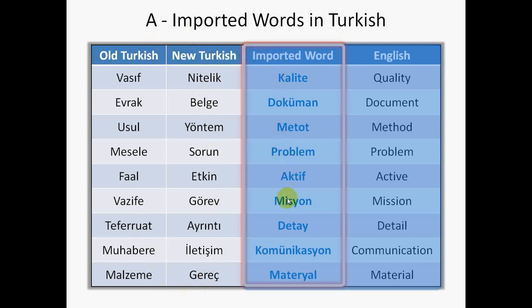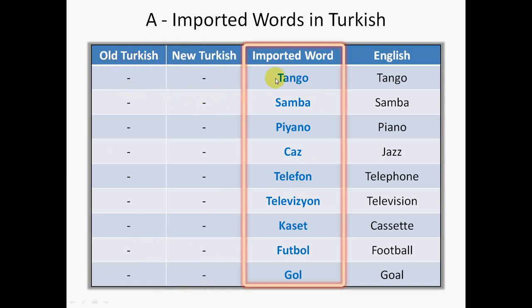Another good thing about the imported words is that there are no other alternatives for some of them. So, for example, Tango is Tango, Samba is Samba, and Piano, Jazz, Telephone, Television, Cassette, Football, Goal are all Turkish words which have no other alternatives. All you have to do in this case is to concentrate on the correct spelling and proper pronunciation. Well, this is all you need to know about imported words.